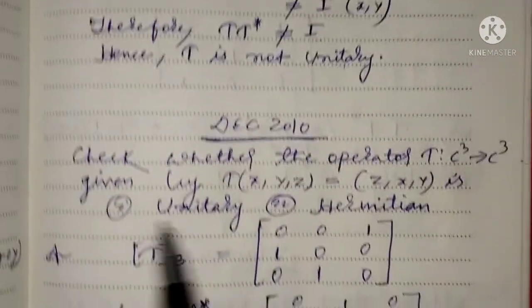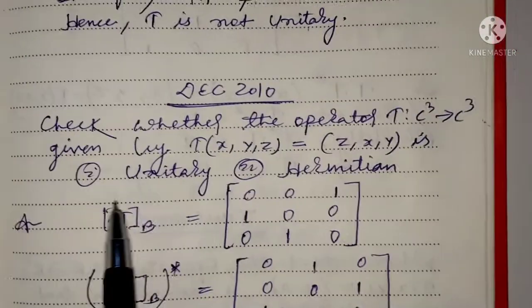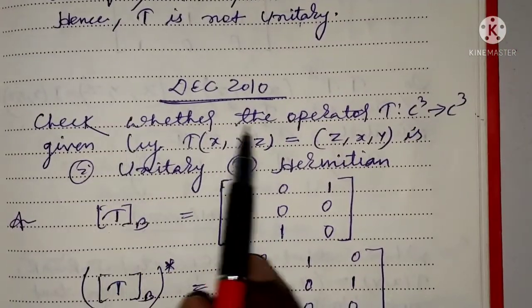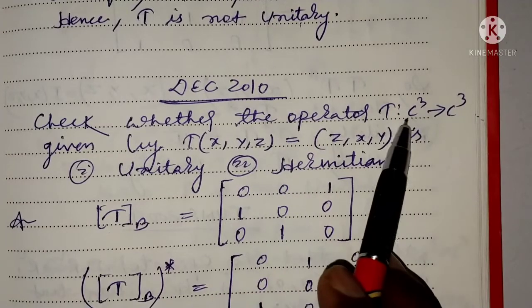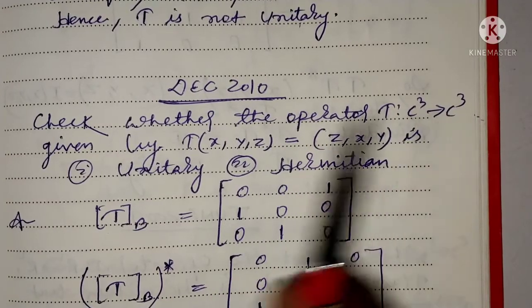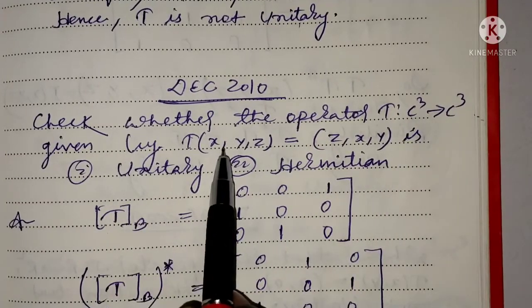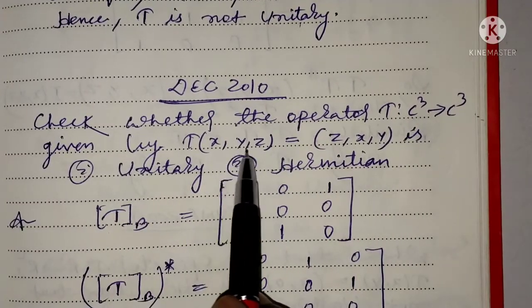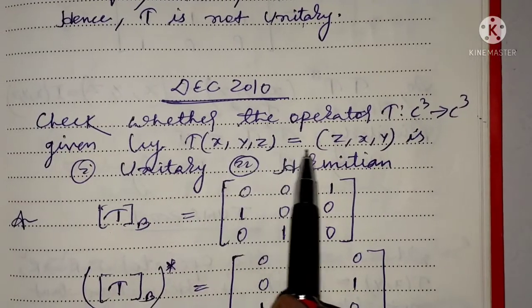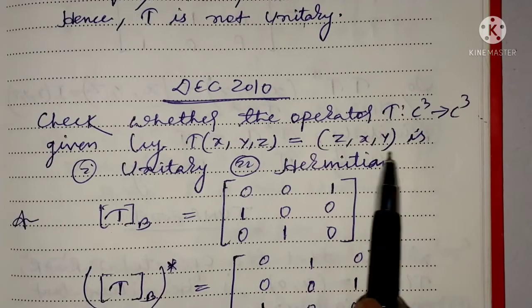Question 2: Check whether the operator T from C³ to C³ given by T of (X, Y, Z) equal to (Z, X, Y) is unitary.